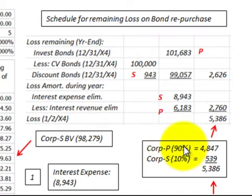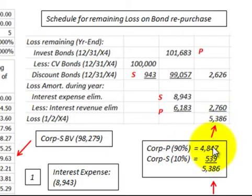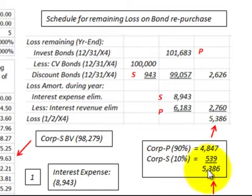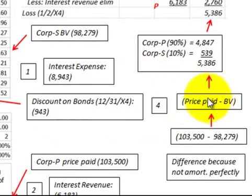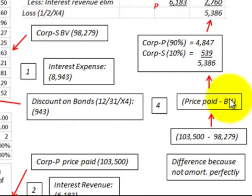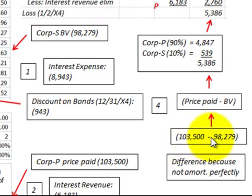Because the loss is split between the subsidiary and the parent — the parent owns 90% and the subsidiary gets 10% — the parent will get 90% of that loss for $4,847 and the subsidiary gets 10% for $539. This loss represents the difference between the price paid by the parent and the book value for the subsidiary at the time of purchase. I'm noting these amounts are slightly different due to imperfect amortization rounding.